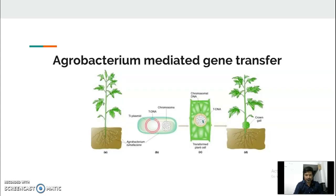A figure shows that Agrobacterium tumefaciens has its own chromosome, and along with the chromosome it has tDNA. This tDNA is also called the Ti plasmid — a special Ti plasmid containing tDNA, which is a very special region of the Ti plasmid. This tDNA contains certain genes responsible for the infection or crown gall disease in plants.